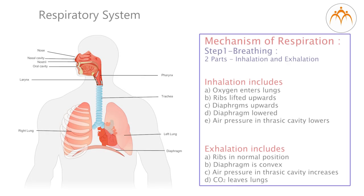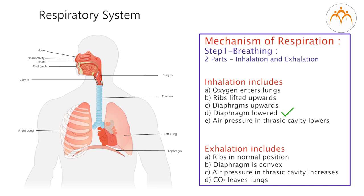Breathing involves inhalation and exhalation. During inhalation we take oxygen-rich air through the nose and send it to the lungs through the windpipe. When we inhale, the diaphragm is lowered and ribs are lifted upwards and outwards. Due to this, the volume of the thoracic cavity increases but air pressure in the cavity decreases, thus air from outside enters the lungs. During exhalation the diaphragm becomes dome-shaped or convex, ribs return to their original position, volume of thoracic cavity decreases and air pressure inside increases. As a result, air rich in carbon dioxide moves out through the nose.